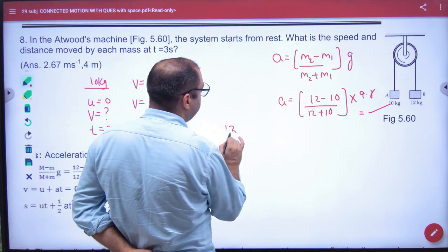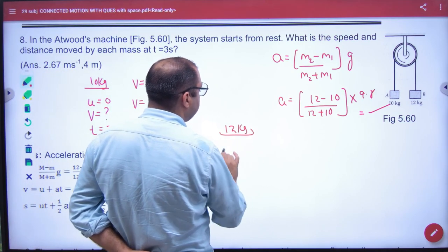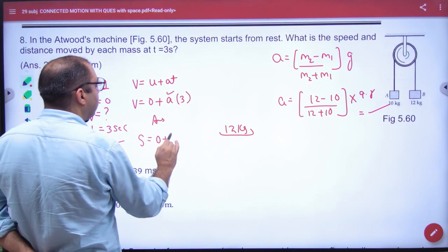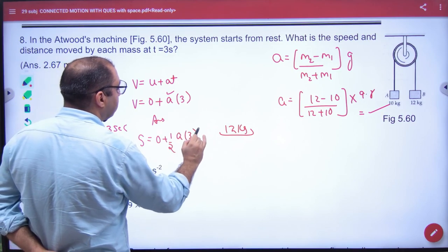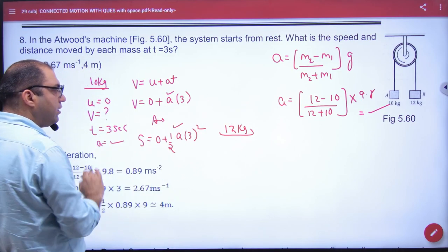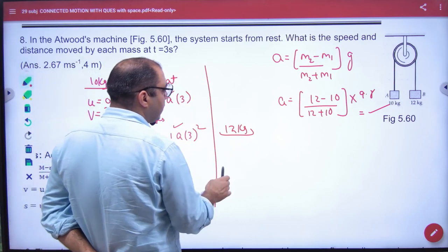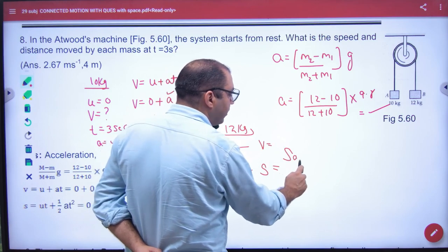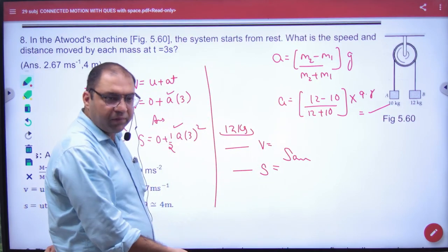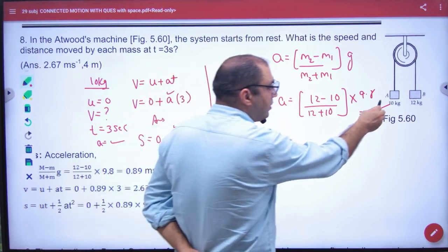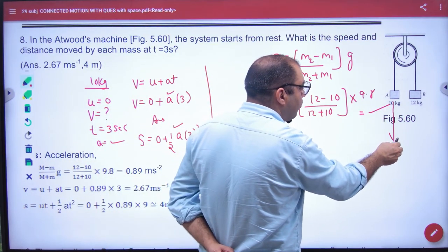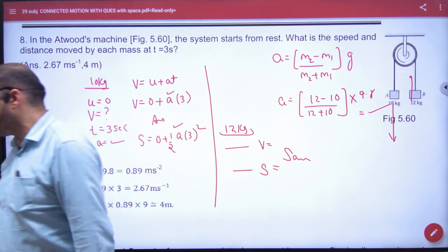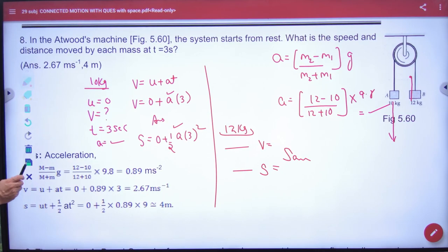In that way, if the mass is 12 kg, then the distance will also be added. Then another equation is 0 plus half into acceleration into 3 square and the acceleration will come from here. Then the mass of 12 kg is same to apply. V and S will be exactly the same because the acceleration is the same both. Why will S come from here? Because the distance will travel, so the magnitude will be the same and the direction will be different. And the method you have to do which I am putting here.